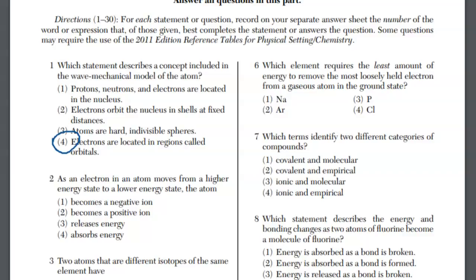On to number two. As an electron in an atom moves from a higher energy state back down to a lower energy state, the atom is releasing energy. Where did that energy go? That energy was released.